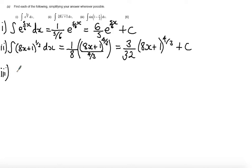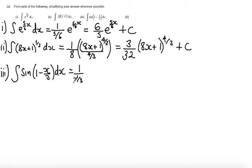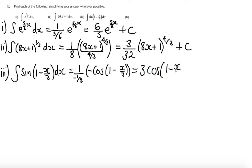For part 3, I'm integrating sine of (1 minus x over 3) dx. Since this is a sine with a linear function inside, I divide by the derivative of the inside function, which is minus a third. So I get 1 divided by minus a third. Integrating sine gives minus cos of (1 minus x over 3). The two negatives cancel, giving positive 3 cos(1 minus x over 3) plus the constant of integration.